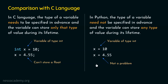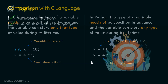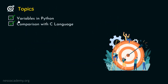Now we know the difference between C programming language variables and Python programming language variables. In C programming language, variables are static. In Python programming language, variables are dynamic. We are done with these two topics — variables in Python and comparison with C language — which means we are done with this lecture.